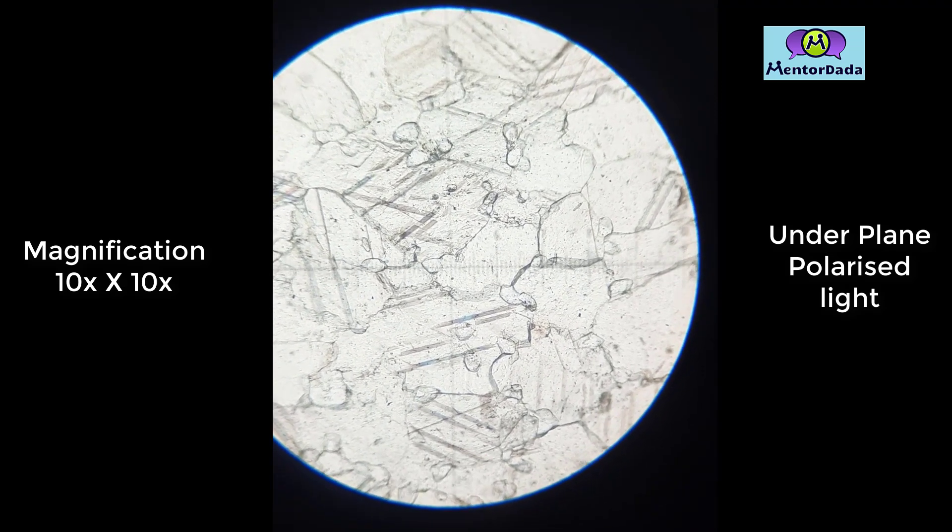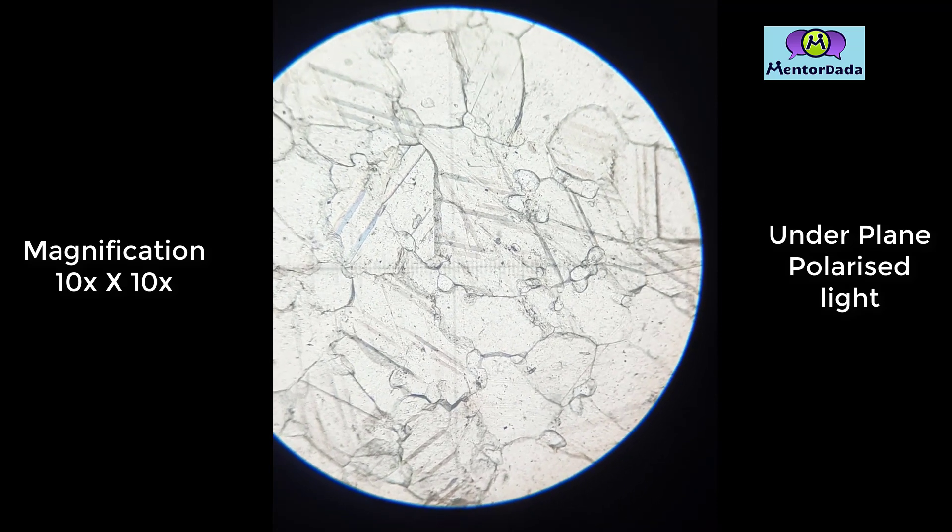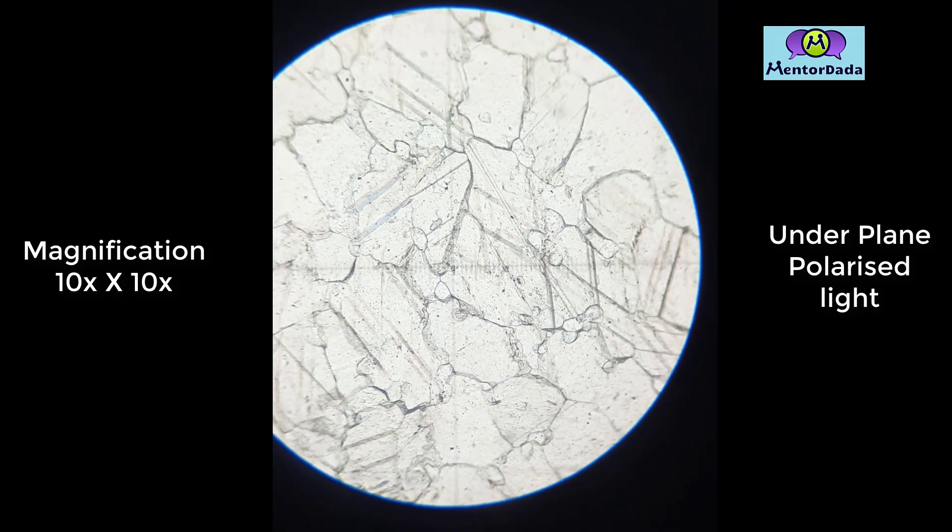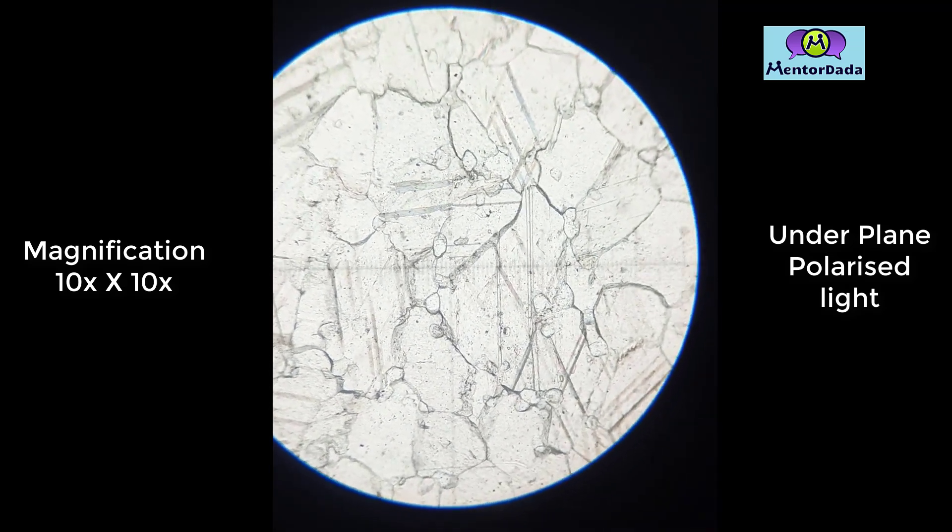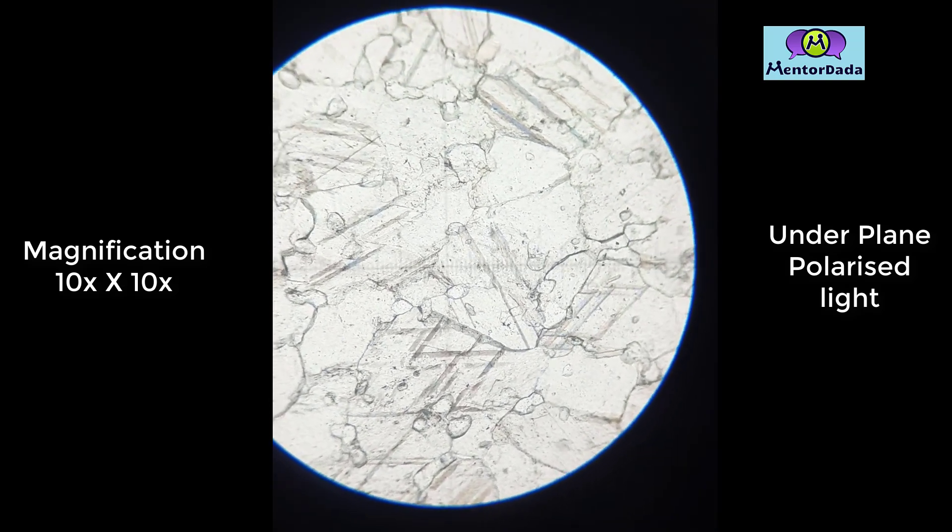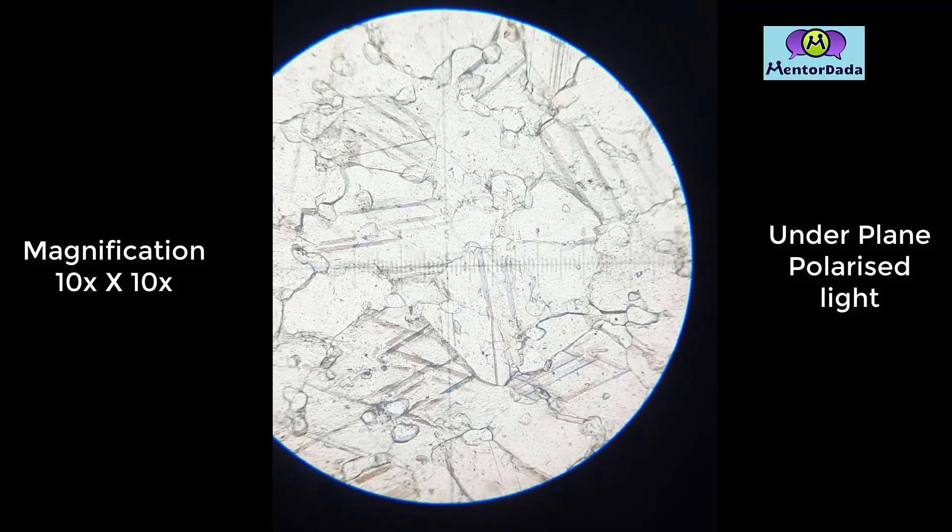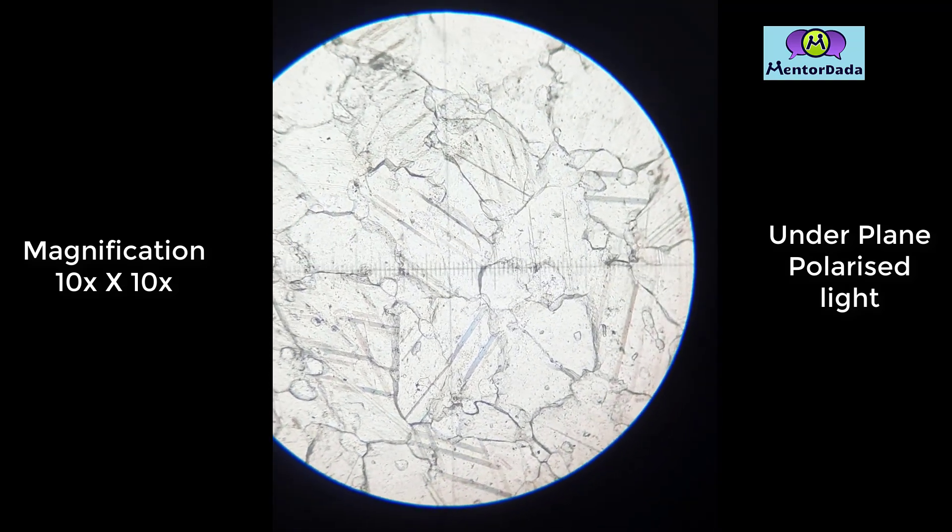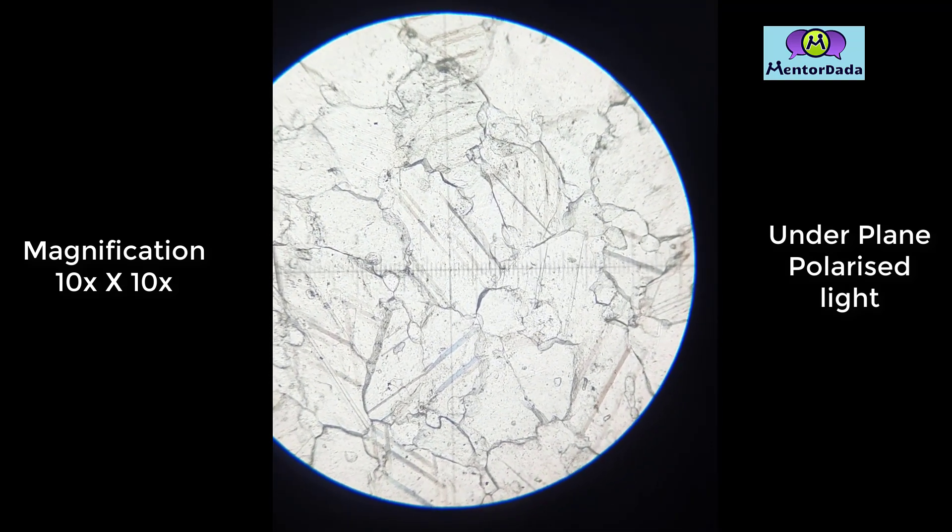As we rotate the stage of this microscope, the mineral shows no color change. We can see that the mineral shows no significant color, so we can say the mineral is colorless.